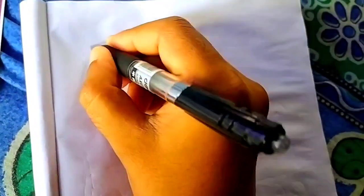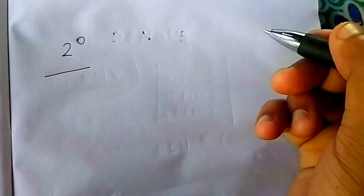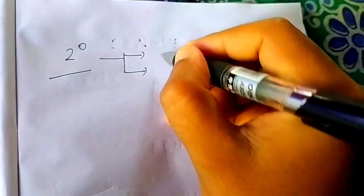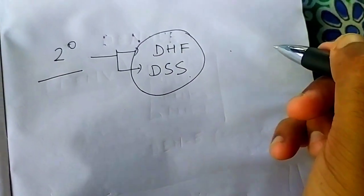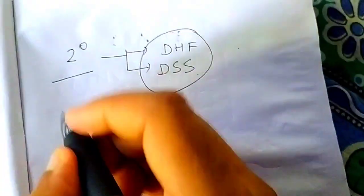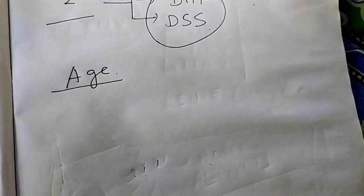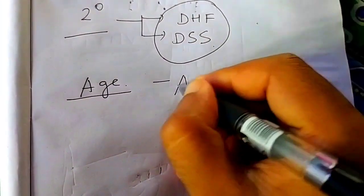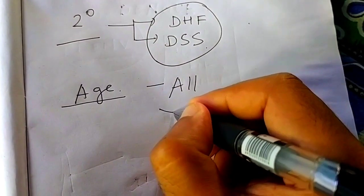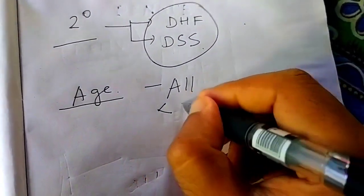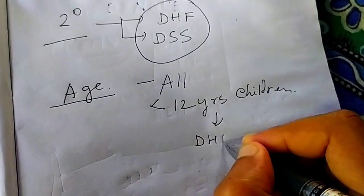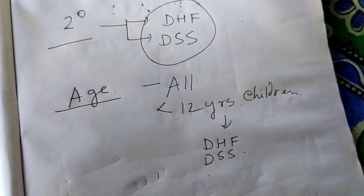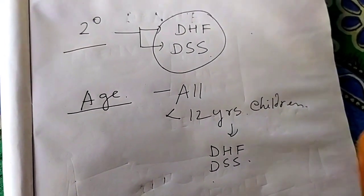In case of secondary dengue, it is very severe. Secondary dengue generally has dengue hemorrhagic fever and dengue shock syndrome. Now in which age group does dengue occur? Dengue occurs basically in all age groups. But children who are less than 12 years are more susceptible to have dengue hemorrhagic fever and dengue shock syndrome.